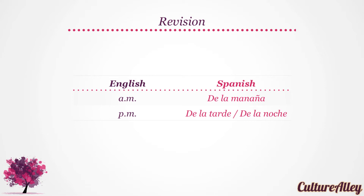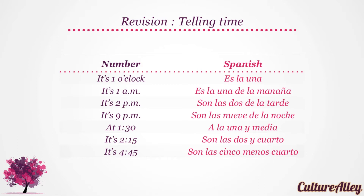A.m. translates to de la mañana, whereas p.m. becomes de la tarde or de la noche. Let's have a look at how we tell what time it is. It's one o'clock translates to es la una. It's one a.m. becomes es la una de la mañana. It's two p.m. becomes son las dos de la tarde. It's nine p.m. is son las nueve de la noche. At one thirty is a la una y media. It's two fifteen becomes son las dos y cuarto. And it's four forty-five translates to son las cinco menos cuarto.